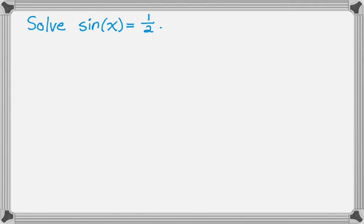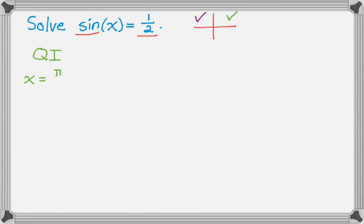The first problem is sine of x equals 1/2. I see a sine and positive 1/2, so I think to myself that could be quadrant 1 or 2. In quadrant 1, the angle that has a sine of 1/2 is pi over 6. So x equals pi over 6, but we're looking for all values of x, so that's plus 2 pi n, where n is an element of the integers.